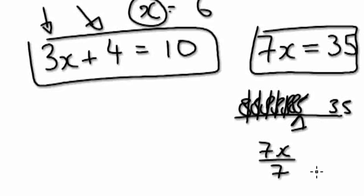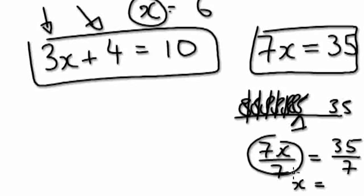Take this down, divide by 7 here, then take the 35 down, divide by 7 over here. This would be x equals - this side becomes x, this here becomes 5.